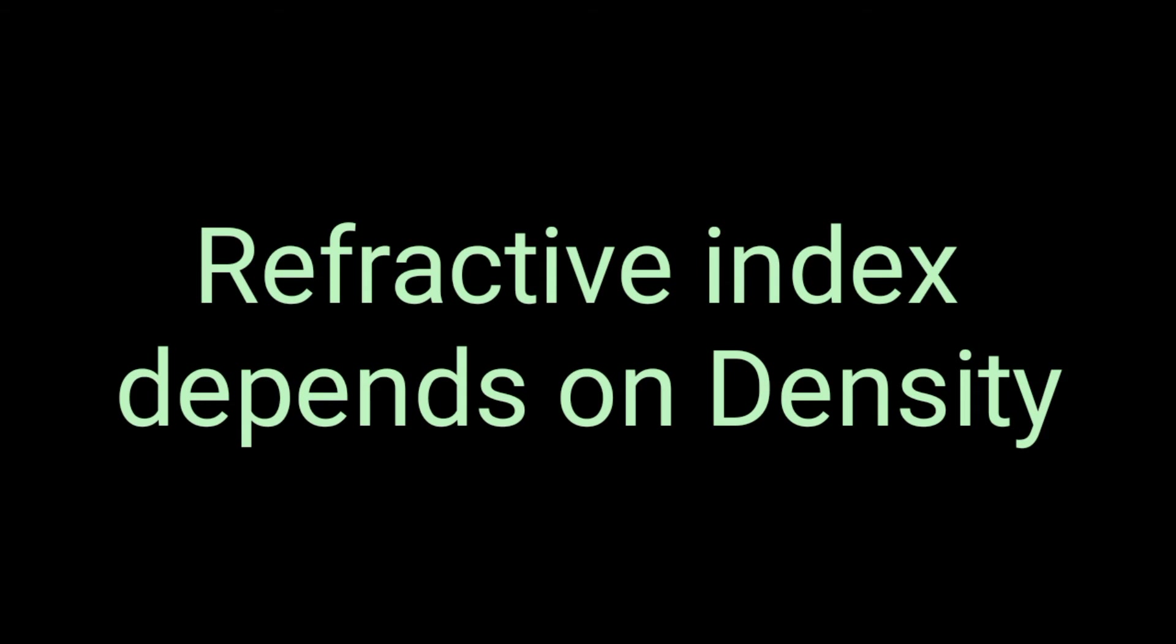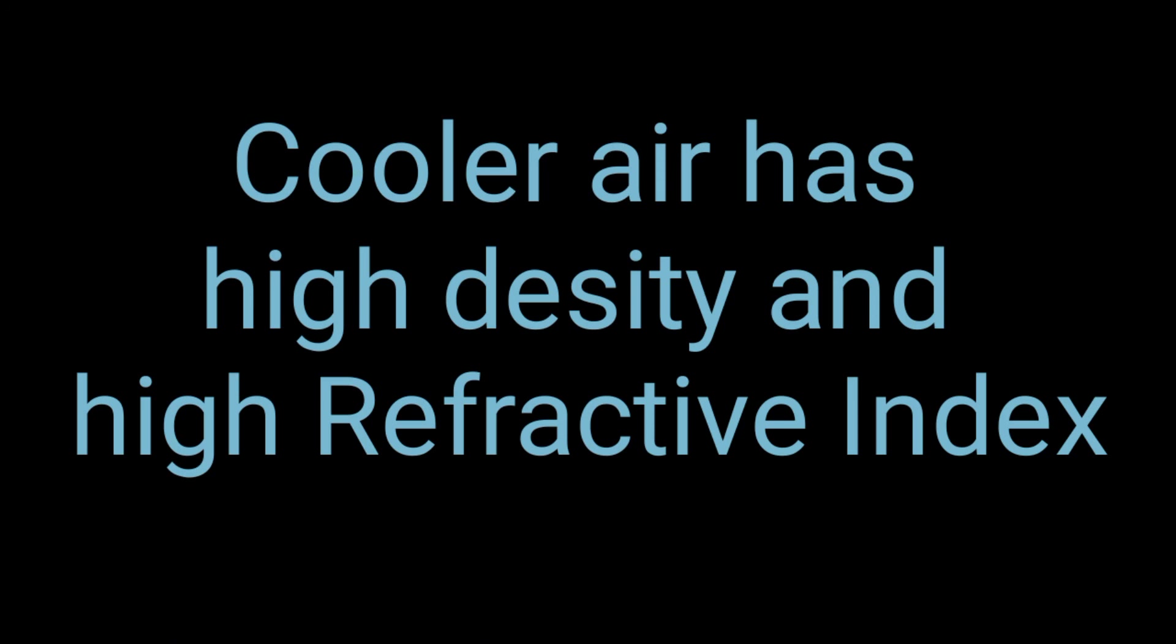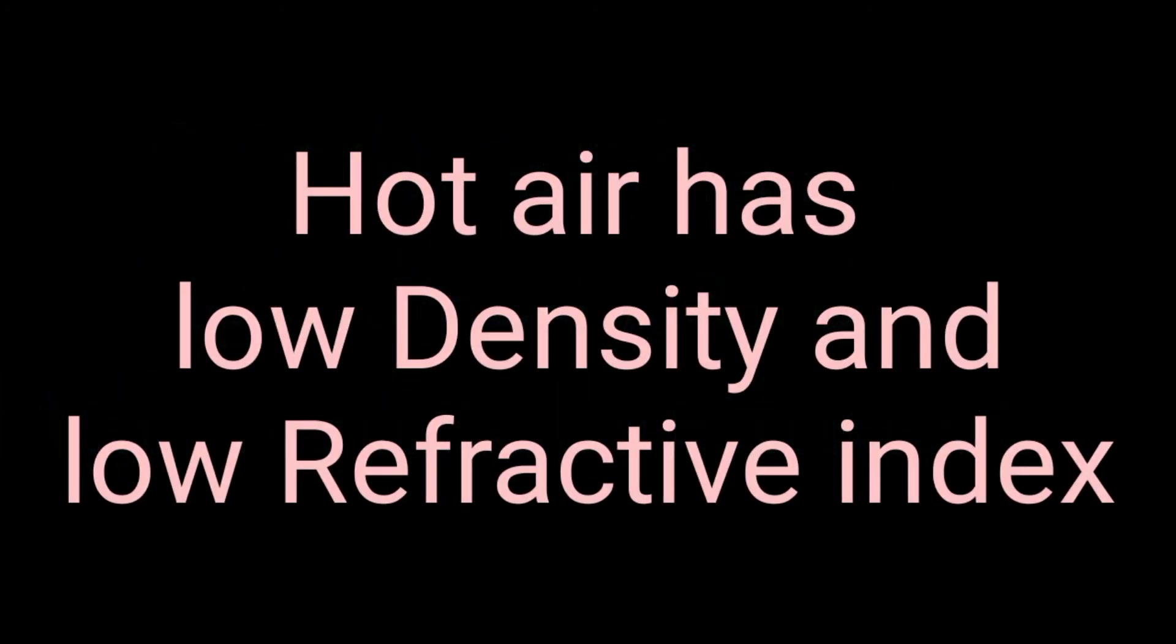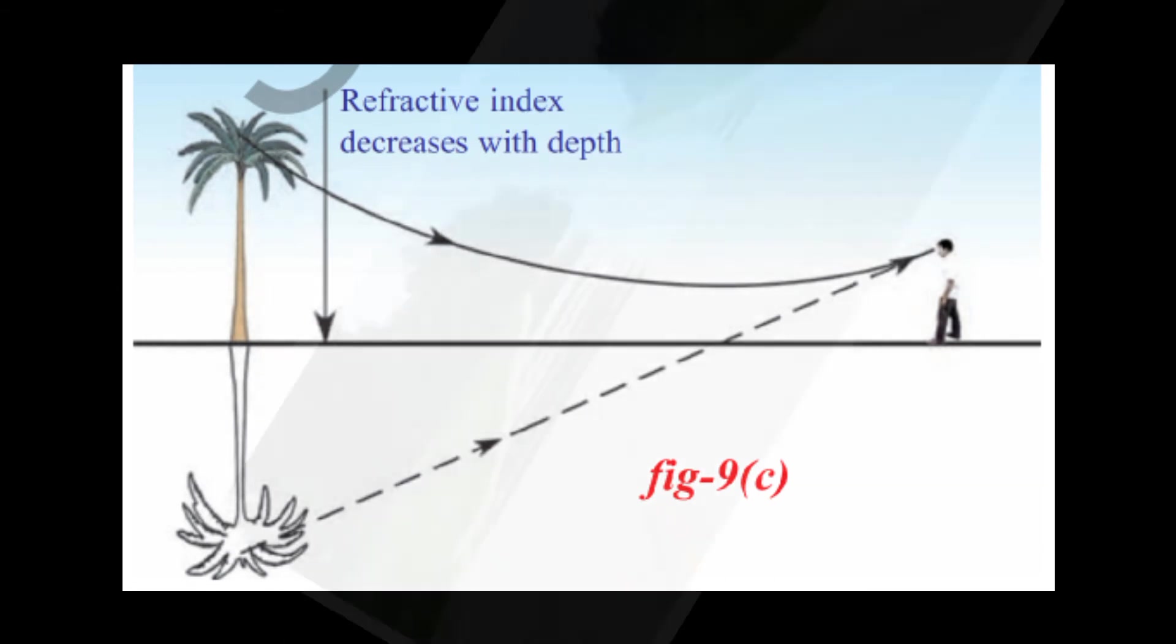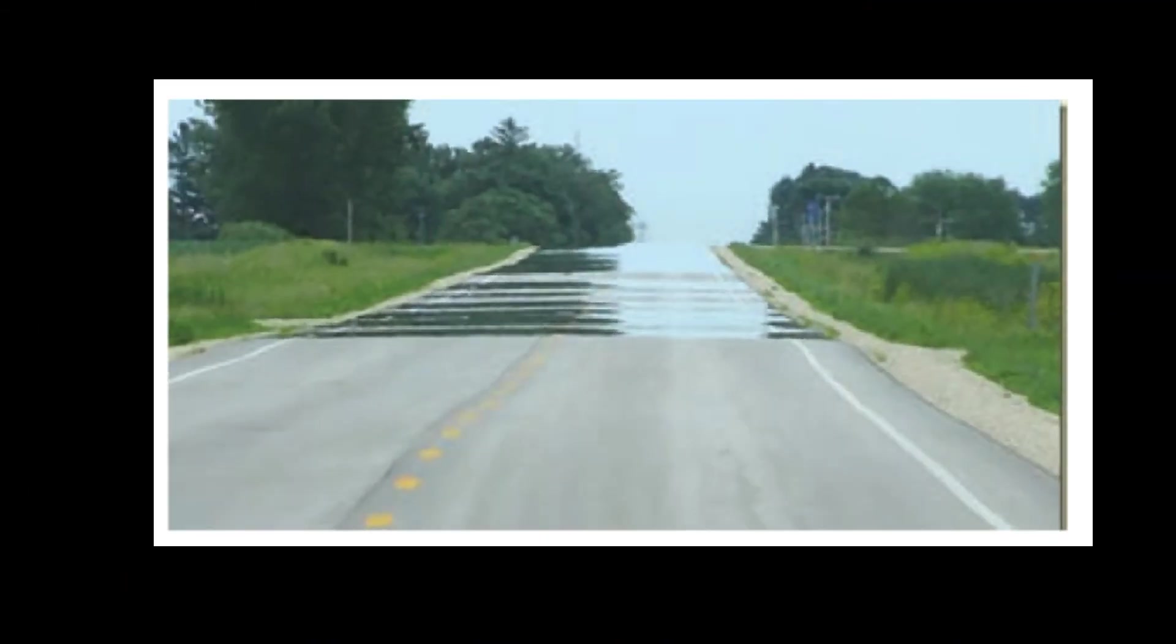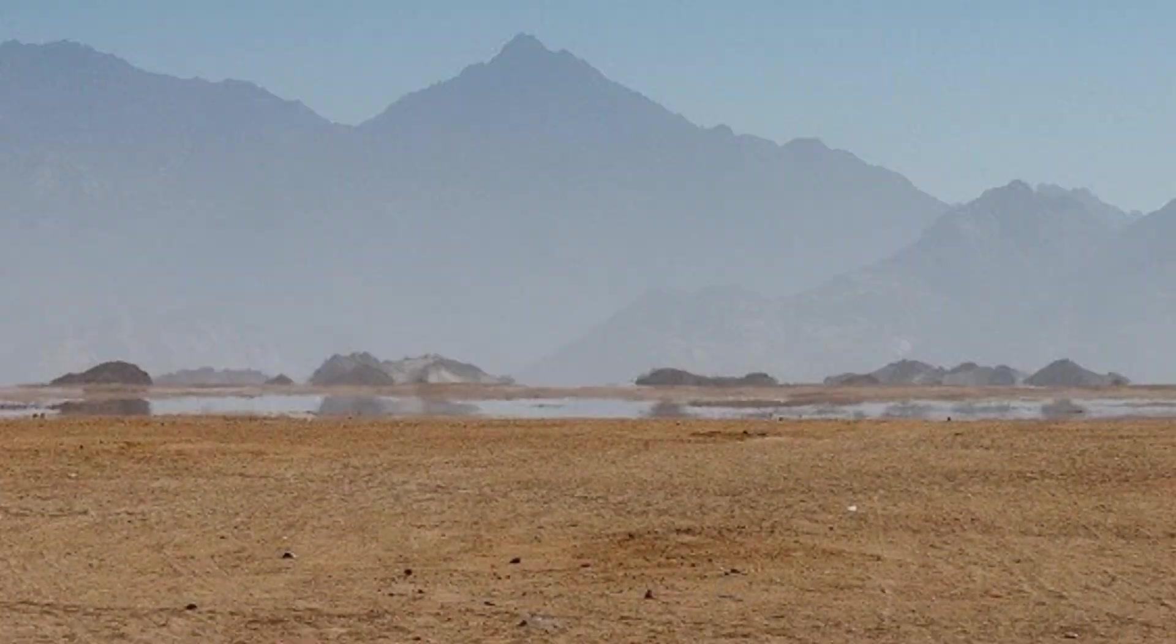Cooler air has greater refractive index than hotter air. The light traveling through the cooler or denser air to hotter or rarer air undergoes total internal reflection. Hence, we feel the illusion of water being present on the road or surface of the earth.